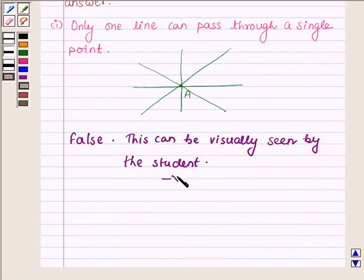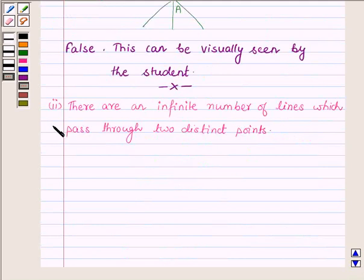So this completes the first part, and now proceeding on to the second part which says: there are an infinite number of lines which pass through two distinct points.